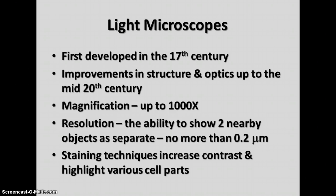One limit to microscope magnification is resolution — the ability to show two nearby objects as separate objects. For light microscopes, the resolution limit is about two-tenths of a micrometer. A micrometer is one-thousandth of a millimeter, or one-millionth of a meter — very tiny. Objects smaller than that can't be determined as separate because of the wavelength of light required to illuminate them. Staining techniques can increase contrast and highlight various cell parts.